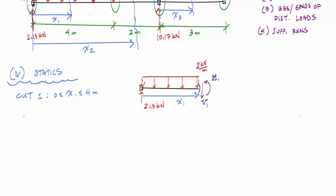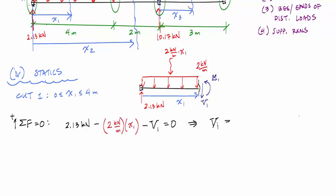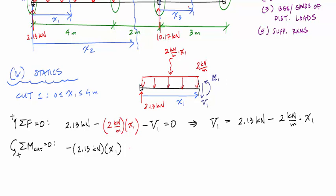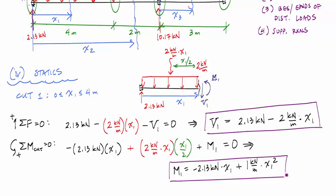Applying equilibrium to cut one's FBD: summing forces in the vertical, 2.83 kilonewtons minus two kilonewtons per meter times x1 minus V1 equals zero, giving the shear function V1 in terms of x1. Taking moments about the cut: 2.83 kilonewtons times x1 minus two kilonewtons per meter times x1 times x1 over two plus M1 equals zero, giving the moment function M1.